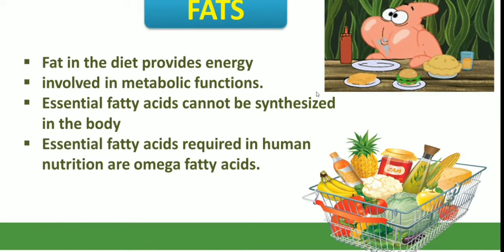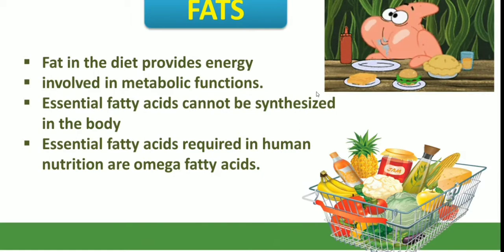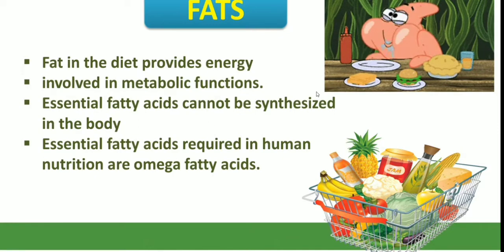Fats are found predominantly in butter, oils, meats, dairy products, nuts, seeds and many processed foods. There are two types of fats: essential and non-essential fatty acids. Essential fatty acids cannot be synthesized in the body and must be provided through the diet. The essential fatty acids required in human nutrition are omega fatty acids. The three main types of lipids are triglycerides, phospholipids and sterols.